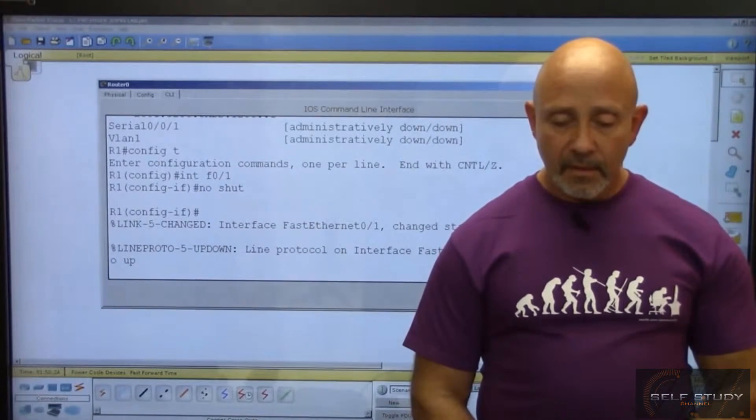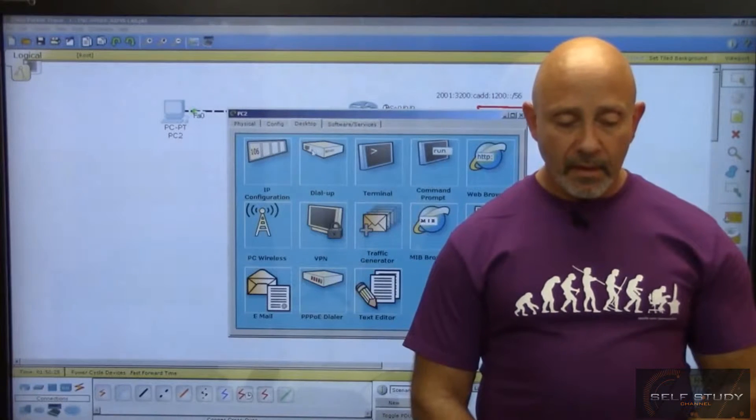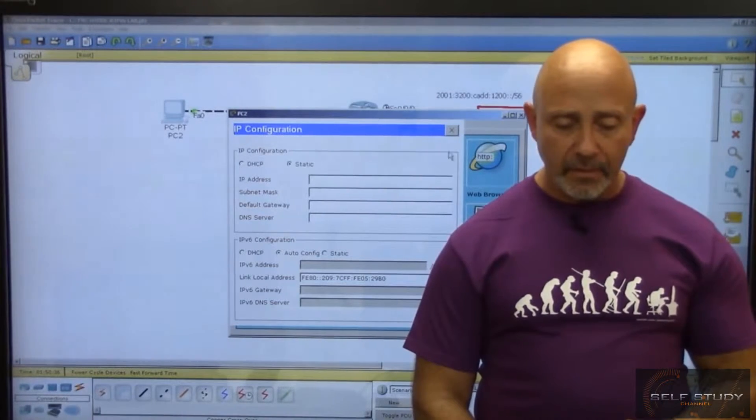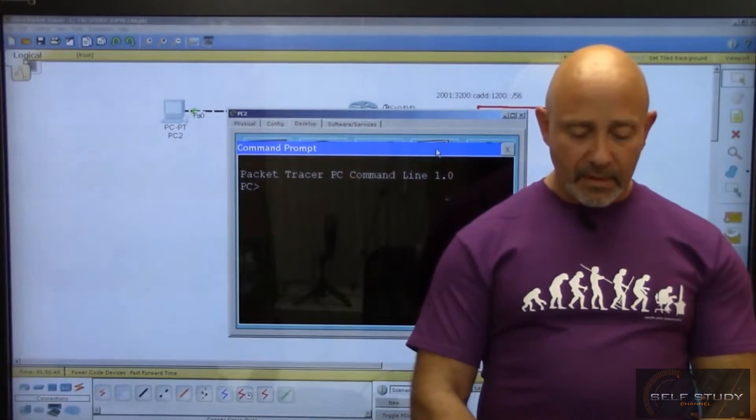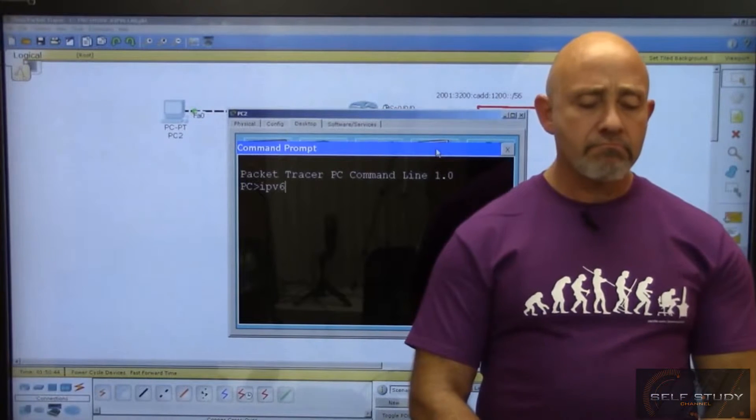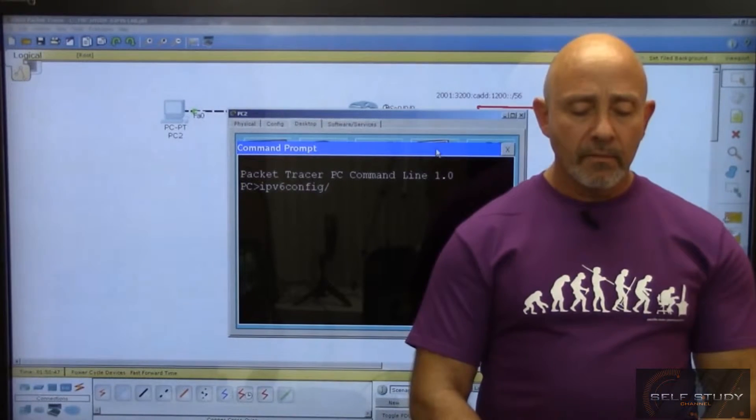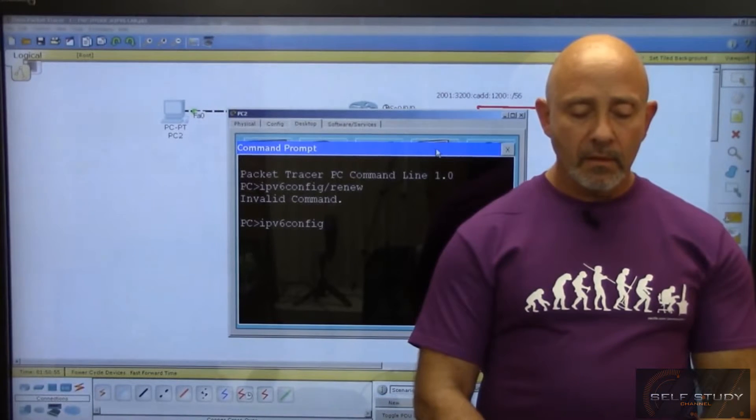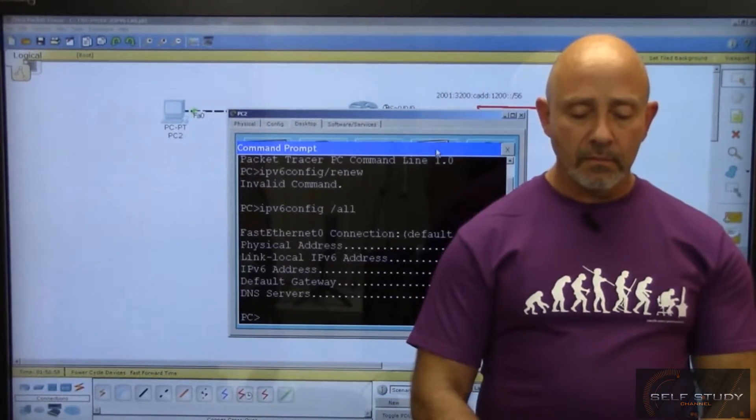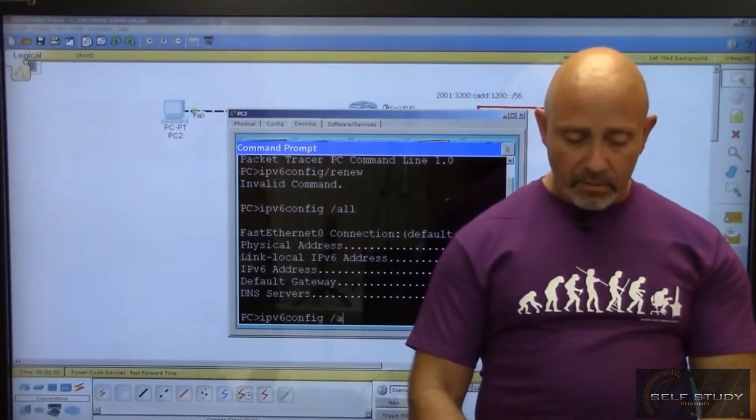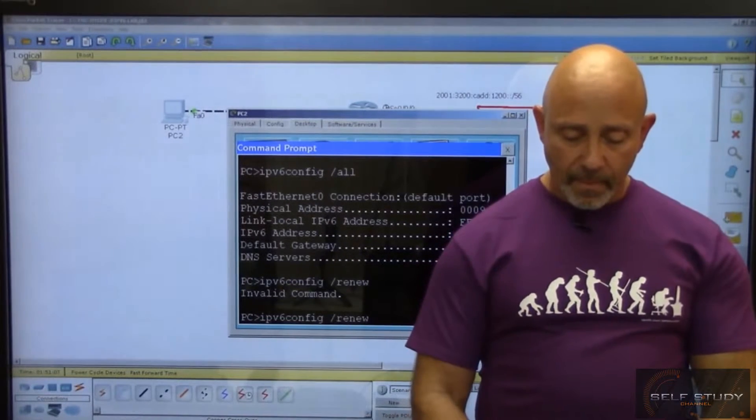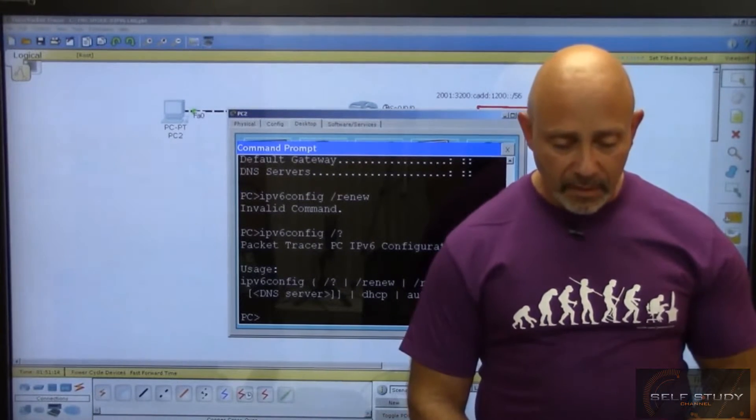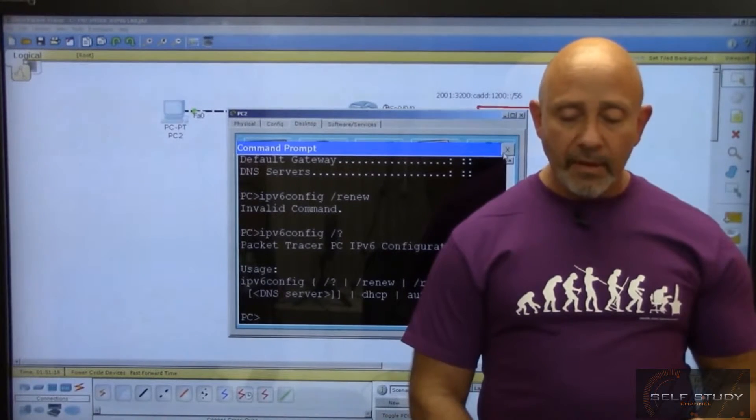Let me go back in, int F0/1, no shut. All right, there she blows. Just out of curiosity, let me take a look at that. I didn't do anything, it just assigned to that interface. I would have to, I think there's a command here you can do ipv6 config /renew, is it? That's what it is. No, it's an email command, ipv6 config... It's saying 'renew', nope, there's no renew. There's a renew right there, why is it telling me that's not doing it? I guess you need a DHCP or something for it to do it, so I can't do it.